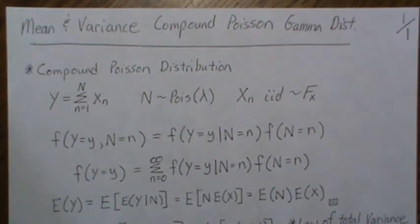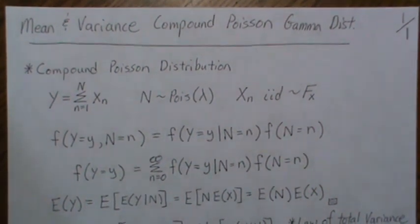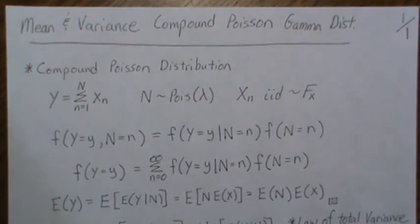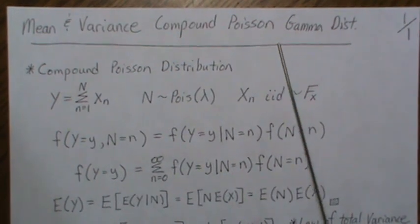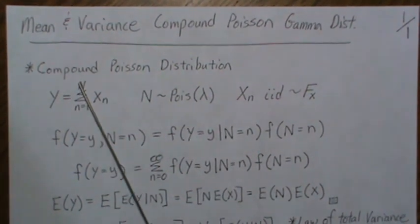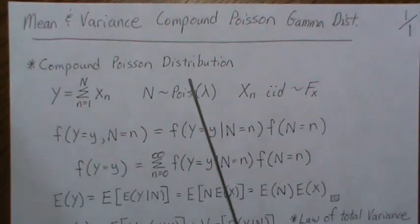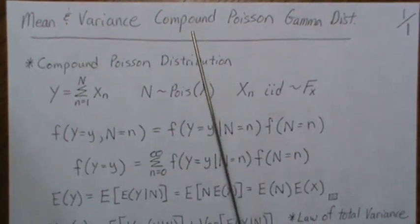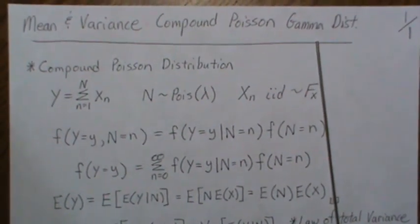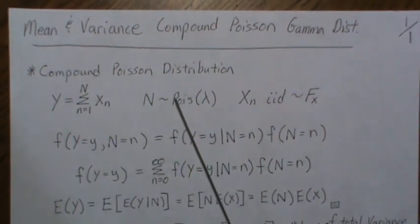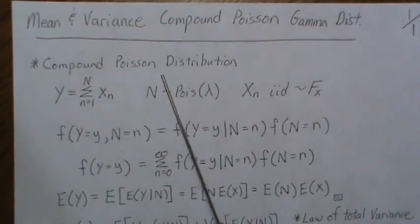In this video we're going to derive the mean and the variance of a compound Poisson gamma distribution. Before we do this, we're going to generically look at something called a compound Poisson distribution, and then the compound Poisson gamma distribution will make more sense after we cover this background material.